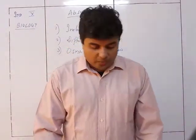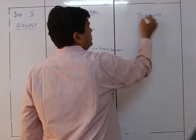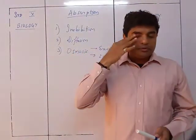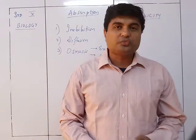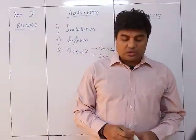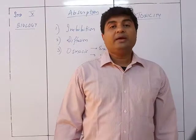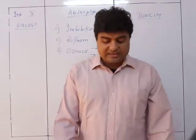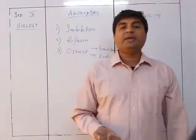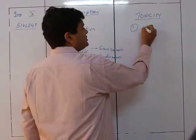The next concept is called tonicity. Tonicity is the concentration of the solute present in the solution. Depending on the concentration of the solution, it tells us whether there will be exosmosis or endosmosis when a cell is placed inside that particular solution. The first type is called isotonic.